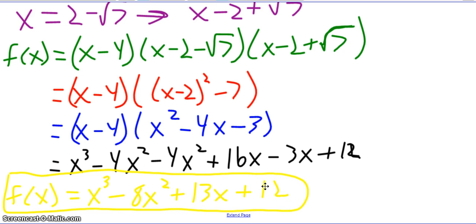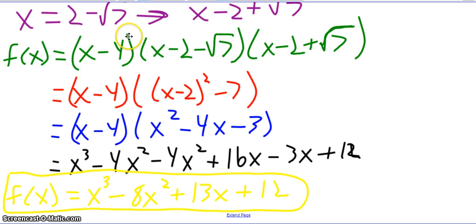This is one correct answer — the simplest correct answer. I could have made it more difficult but still correct by putting an exponent on any one of these factors. For instance, I could have made it x minus 4 to the 7th power — that would be a lot more difficult to multiply out, but it would still be correct.